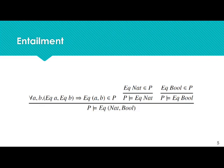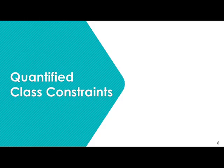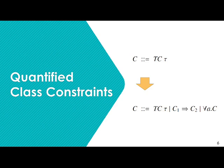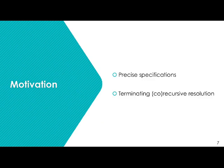Haskell is currently quite limited in what it allows with these constraints. What we want to do is extend this with quantified class constraints — extending from simple type class constraints to accept more complex constraints containing constraint implication, type abstraction, and arbitrary nesting. The reason we want to do this is twofold: these constraints allow for more precise specifications enabling a more expressive language, and they enable terminating resolution for a larger set of applications.